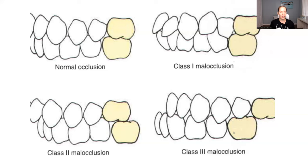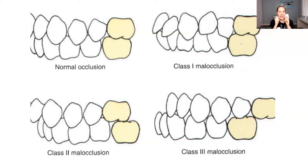I'm going to save overbite and overjet for another video. I just wanted to talk about the different classes of occlusion. Something else to note is class one malocclusion — this is where the first molars properly fit together, but the anterior teeth are starting to protrude. And as I mentioned at the beginning, class two malocclusion: sometimes the anterior teeth can protrude, but other times they can go the other way back. So there are different types.